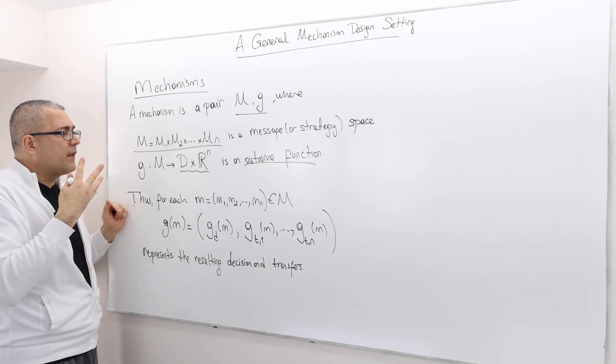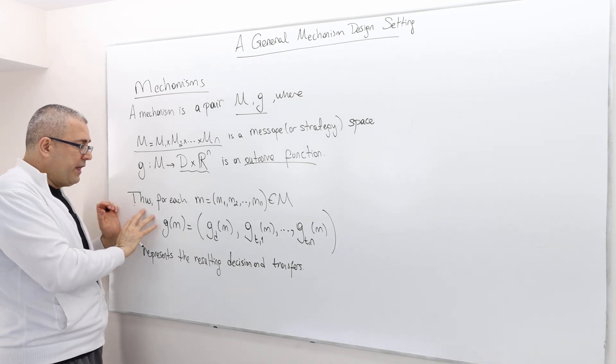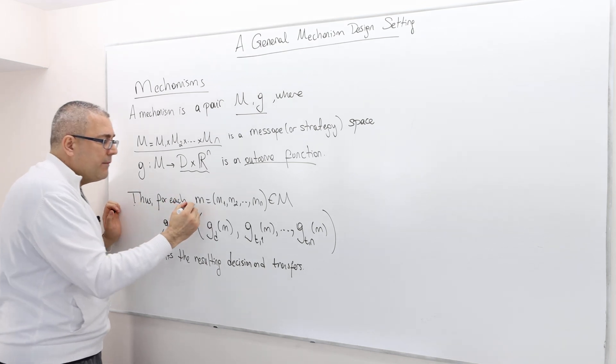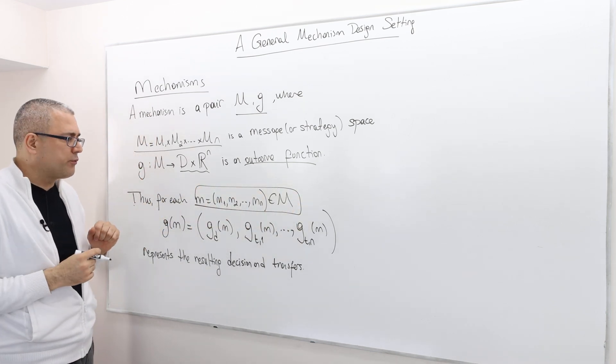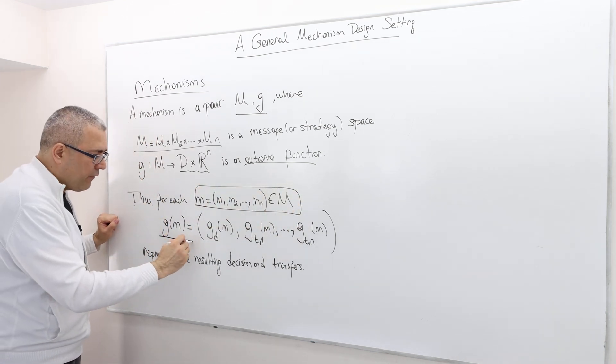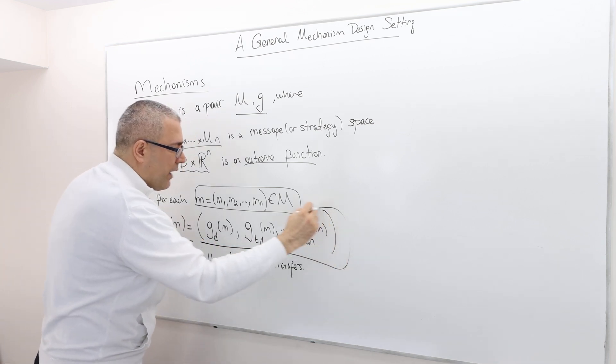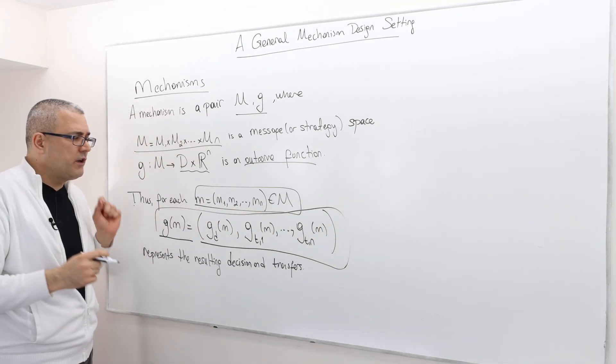Okay. So therefore, for any message profile or strategy profile M, G of M is going to have N plus one components.